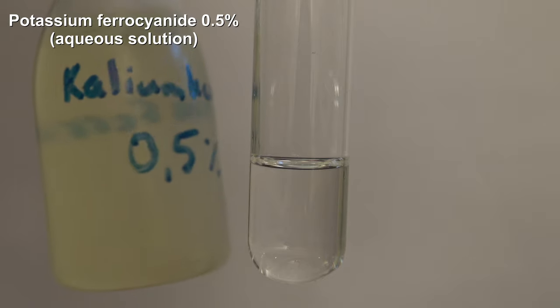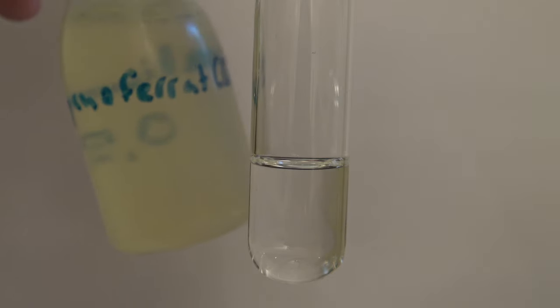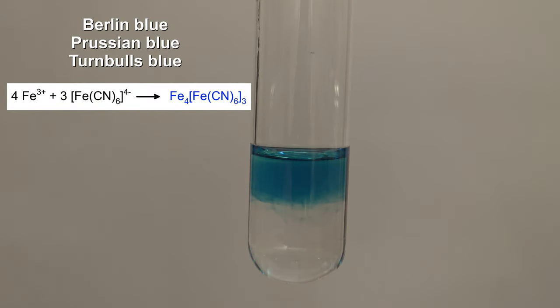Then a 0.5% aqueous solution of potassium ferrocyanide was added to the filtrate. This reacts with iron-3 ions to form a blue compound that is known as Berlin blue, Prussian blue, or Turnbull's blue, which is a proof of the presence of iron.